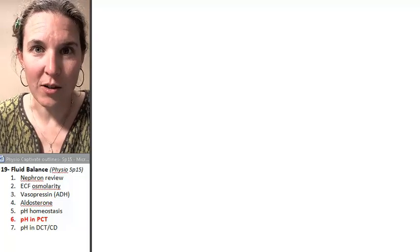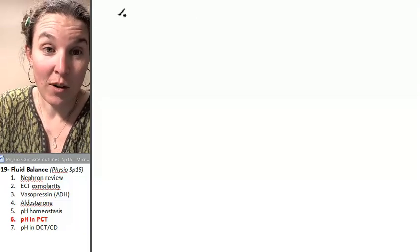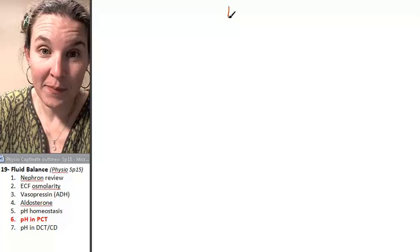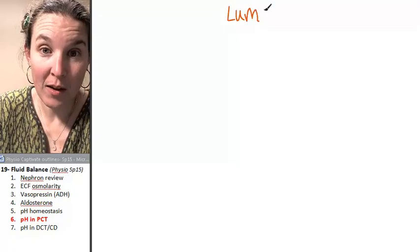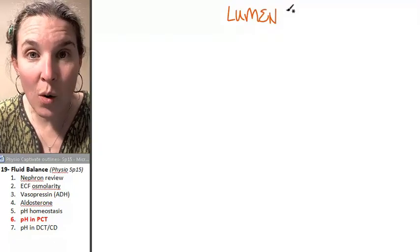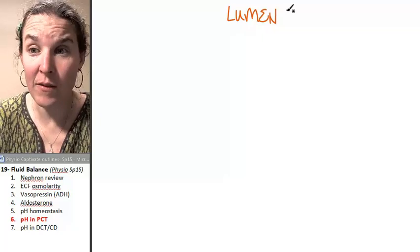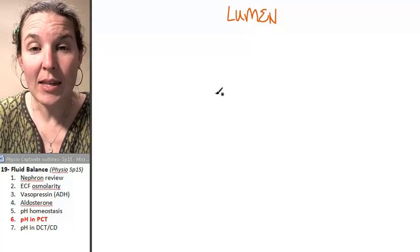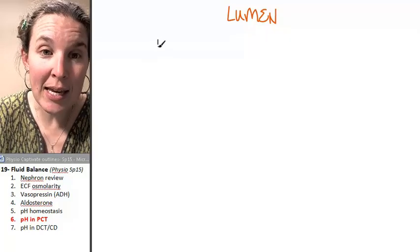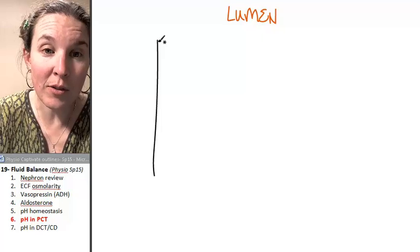I must draw you a picture. First of all, this is the lumen of my nephron. You have to know where my lumen is, because otherwise none of this is going to make sense. This is the lumen in the proximal convoluted tubule.